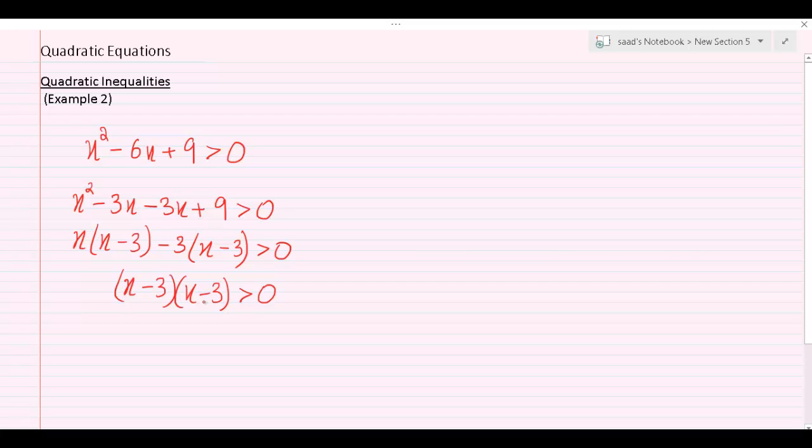So if you were to assume that instead of greater than 0 we have equals to 0, that will lead us to the conclusion that x equals to 3 or x equals to 3. This is what we call repeating roots or equal roots. The roots are the same.